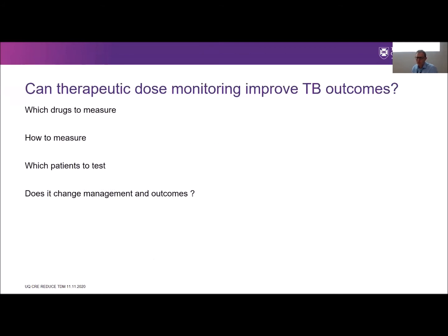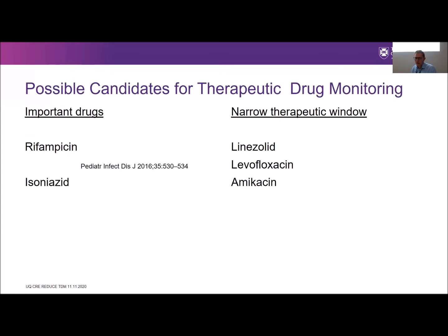Can therapeutic drug monitoring improve TB outcomes? Which drugs should we measure, and which patients do we test? I wouldn't suggest testing every TB patient. Possible candidates include rifampicin and isoniazid, the most bactericidal drugs and key to a highly potent regimen — resistance to both defines multi-drug-resistant TB. Also the drugs used in MDR-TB such as linezolid, moxifloxacin, and levofloxacin. These are often off-label, developed for other syndromes like gram-negative infections, but often have a narrow therapeutic window and may be candidates for TDM.